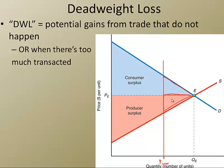However, since we're not making those transactions, these gains from trade all in this triangle are not going to happen. This whole big triangle right here is dead weight loss, which we will abbreviate DWL. What's happening is that we would have had gains from trade, but we don't if these units are not transacted.